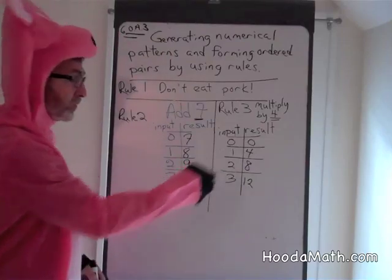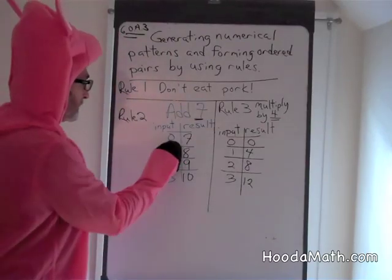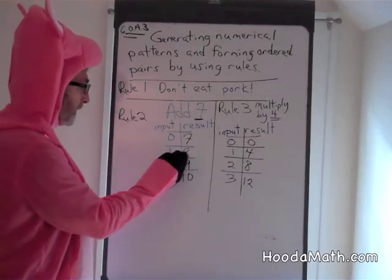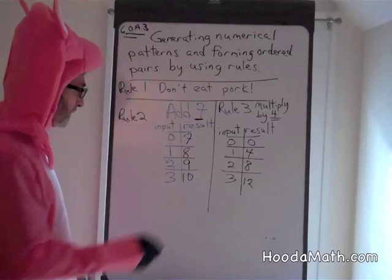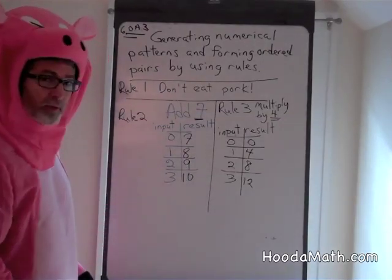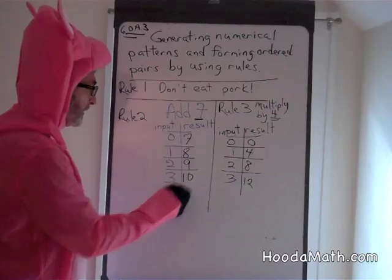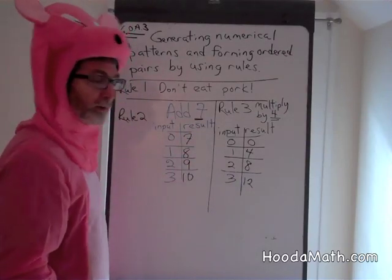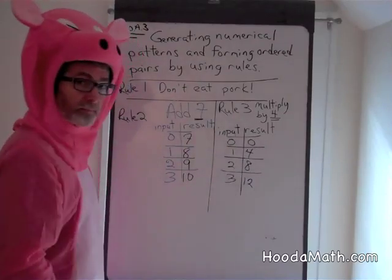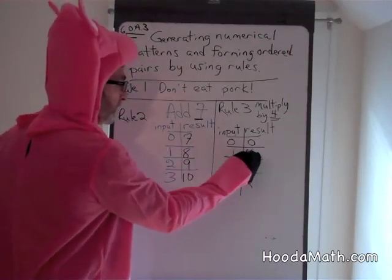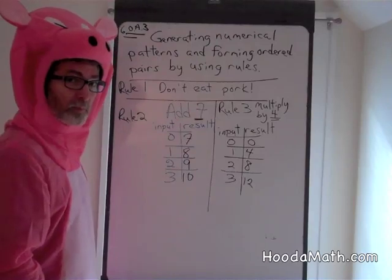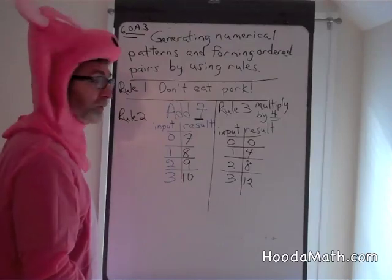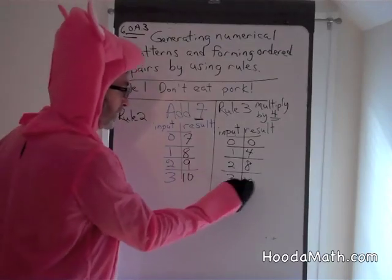By using these rules, we've formed ordered pairs. Under rule 2: (0, 7), (1, 8), (2, 9), and (3, 10) are our ordered pairs. Under rule 3, our ordered pairs are (0, 0), (1, 4), (2, 8), and finally (3, 12).